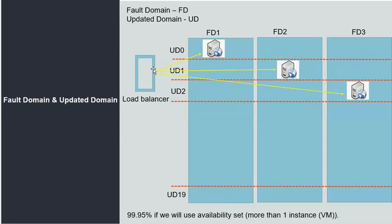When one update domain is being patched, the application in that domain is unavailable, but the other two remain available. All three instances are connected with the load balancer, so if one is unavailable, the remaining two serve traffic. This improves availability — while it is less than using different availability zones at 99.99%, it still improves beyond a single instance at 99.9%.